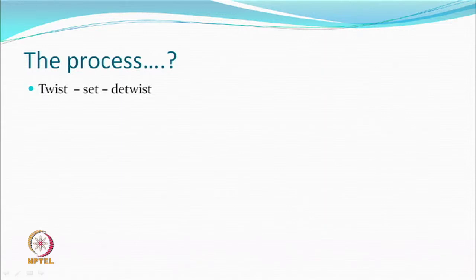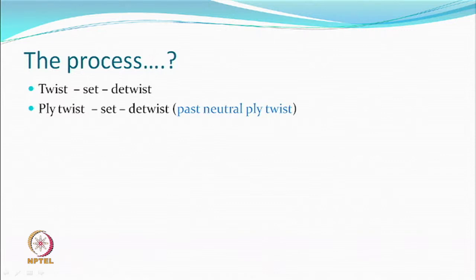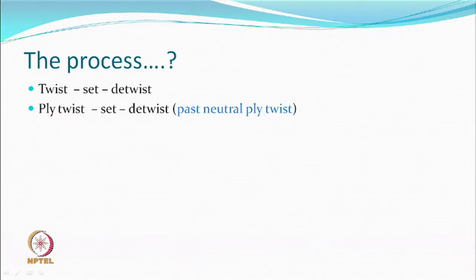That can be done, and this kind of process can be done only in multifilament yarn. If you have a spun yarn then you can use a slightly modified process which is ply twisting, set, and retwist. If two yarns have been ply twisted, you can go past the neutral ply twist and then proceed, but the setting here will be through the solvent process.